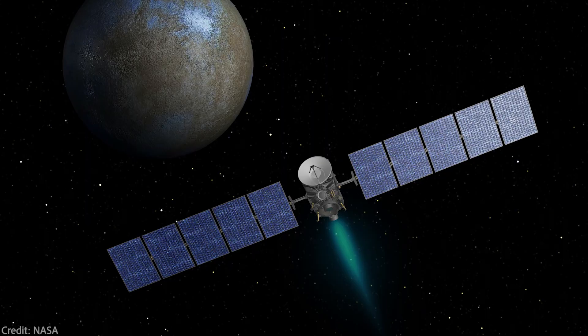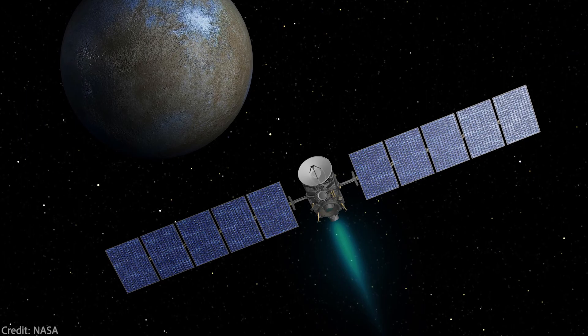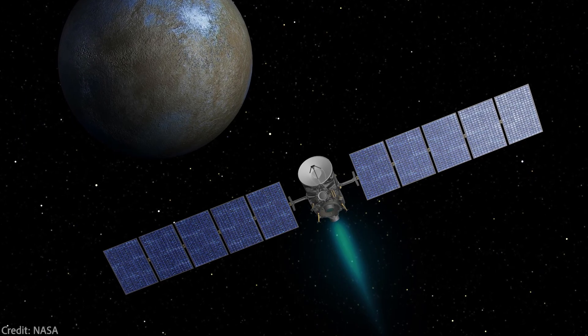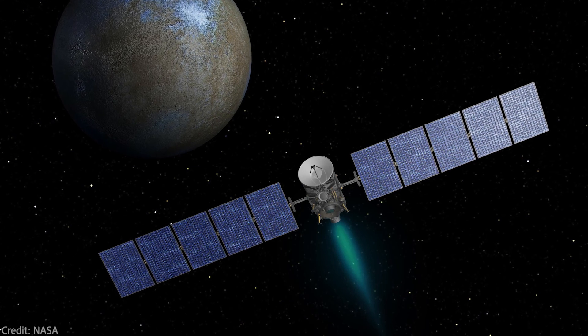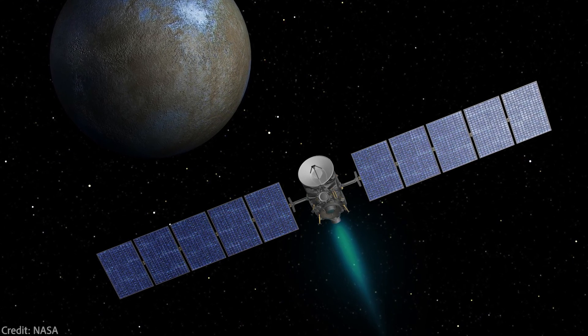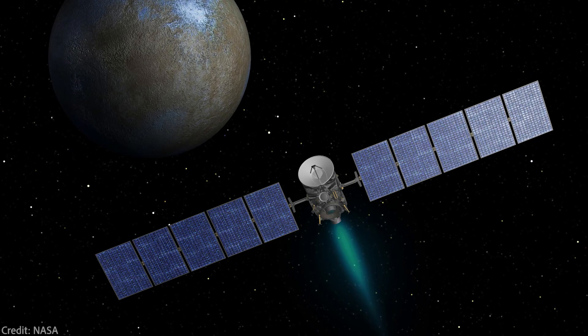Yes, it took the Dawn spacecraft four days to reach the velocity of only 100 kilometers or 60 miles per hour. But after accelerating for a very long time, it eventually became one of the fastest spacecraft ever launched.